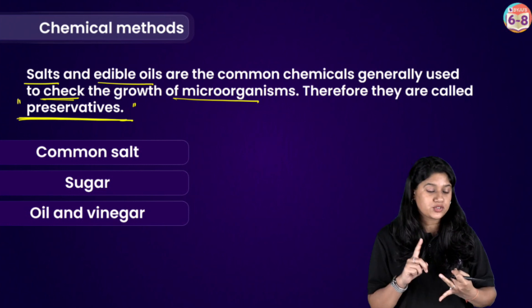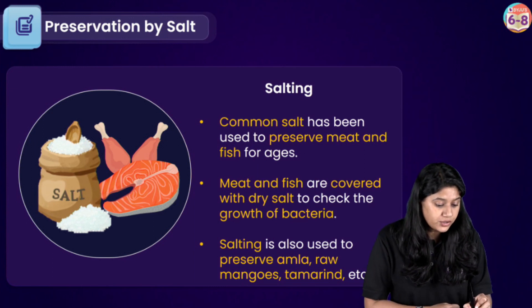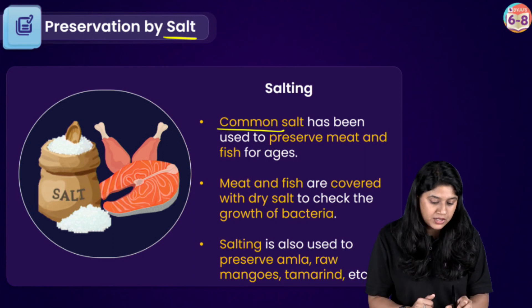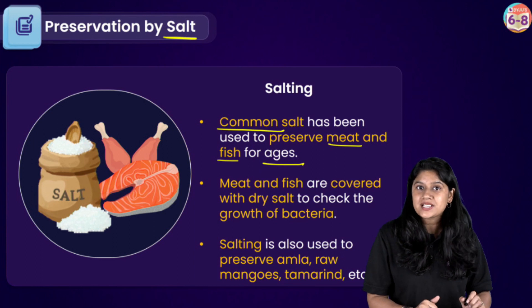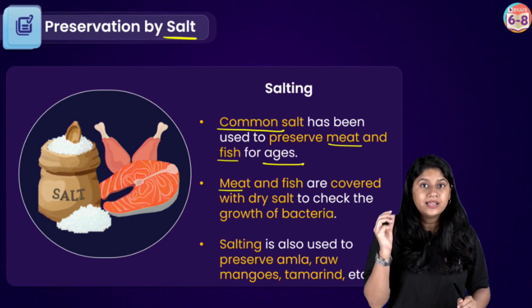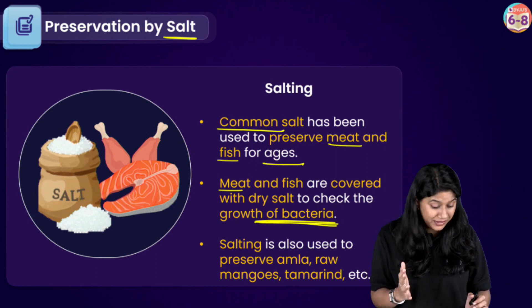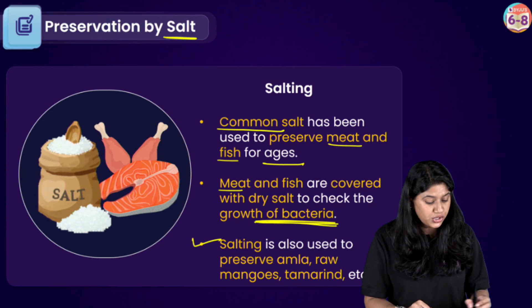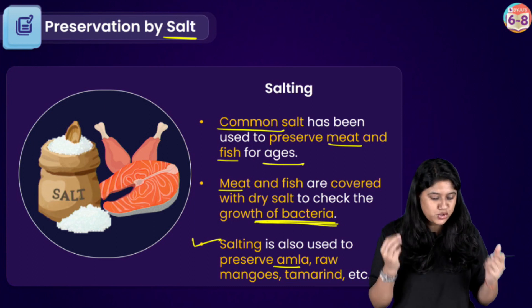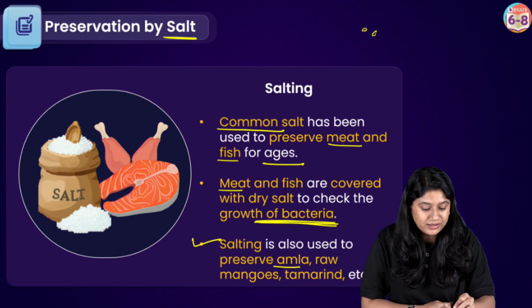The chemical methods include the use of common salt, sugar, and oil and vinegar. Starting with common salt — if we are using salt, we also call it curing. Common salt has been used to preserve meat and fish for ages. When we add salt on the meat, it keeps a check on the growth of bacteria and avoids bacterial growth. It is also used to preserve amla, mangoes, tamarind, etc. If your parents are making pickle, you will see that they add a large amount of salt.